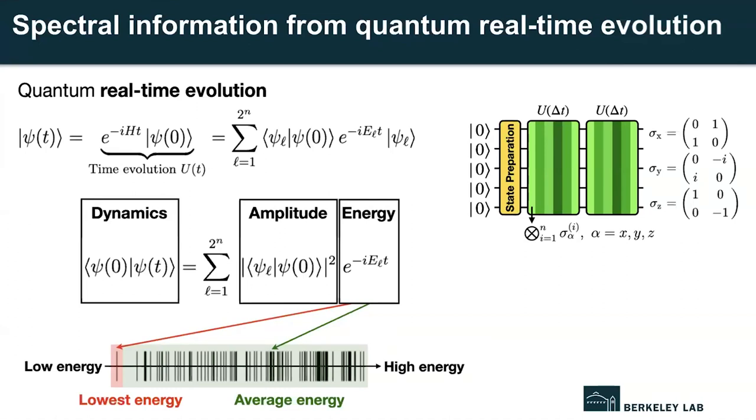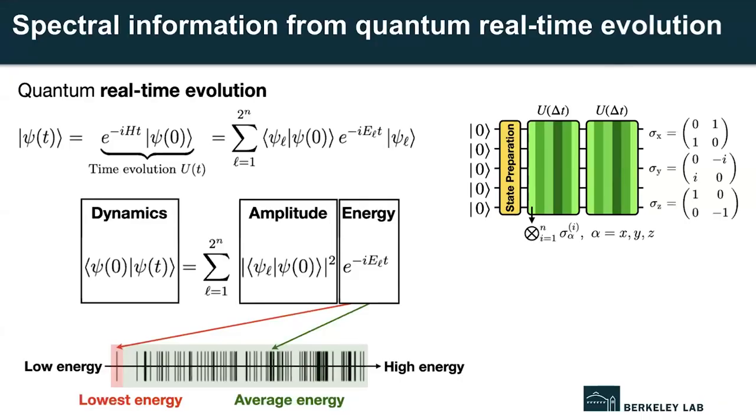We can write down an equivalent expression of the overlap in the energy basis by a basis transformation. The resulting expression on the right-hand side is simply a sum of sinusoids, whose frequencies precisely encode the configurational energies of the Hamiltonian we care about. The energies and the weights of the stationary states, or eigenstates, are reflected in the composing frequencies or phases and amplitudes of a signal. These can be extracted on a classical computer once a time series gets sampled on a quantum computer. The bottom barcode represents a typical energy spectrum of a many-body system.